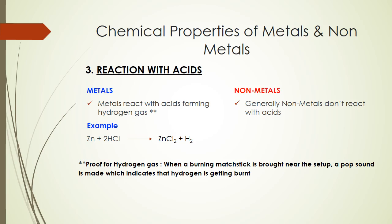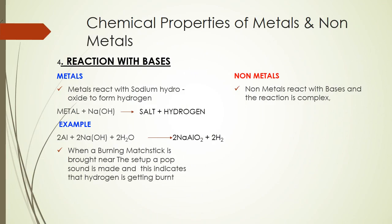When metals react with acids, they form hydrogen gas. Nonmetals don't react with acids. For example, one molecule of zinc reacts with two molecules of HCl to give ZnCl₂ plus hydrogen gas. The presence of hydrogen gas can be confirmed by bringing a burning matchstick near the setup — you will hear a pop sound, indicating that hydrogen is being burned.